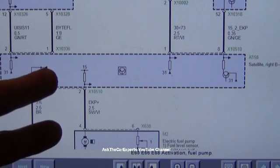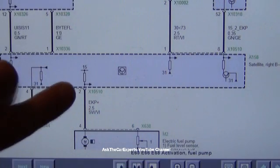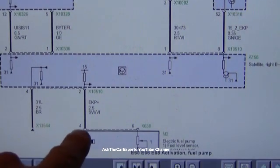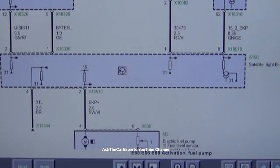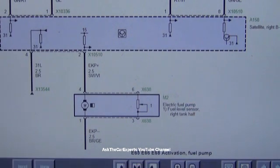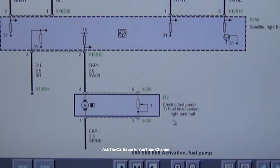You can check continuity between pins 2 and 4 and make sure that you don't have a break in this wire. You can also power the pump at pin 4 to verify that the pump is running, and your ground would be pin 1. This is the motor for the pump right here, and also part of it is the fuel level sensor.